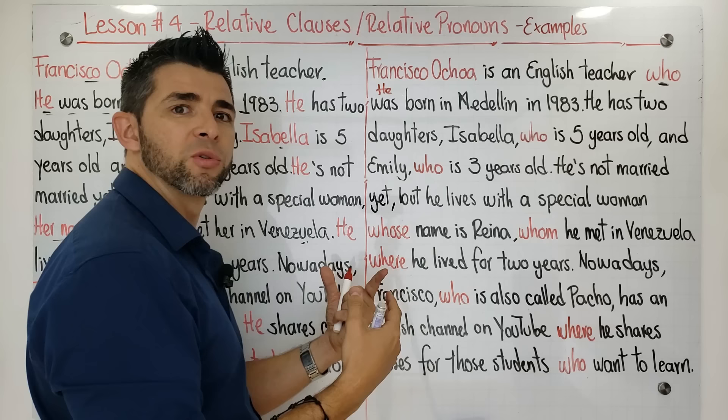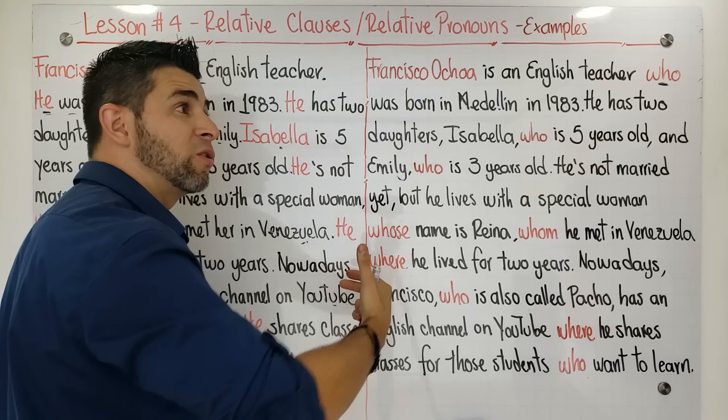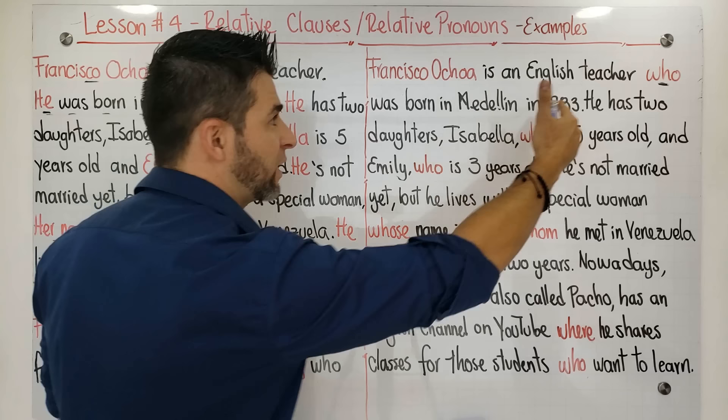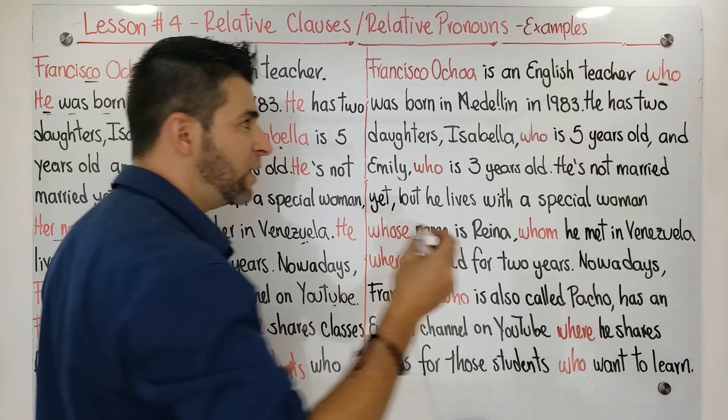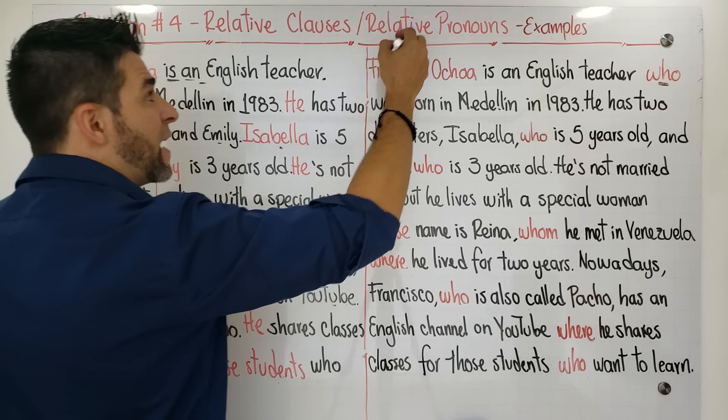This is a subject pronoun and this is a relative pronoun — it's very weird to have two pronouns together. For example, in Spanish: 'Francisco Ochoa es un profesor de inglés, quien él nació en Medellín en 1983' — that's strange. You don't need that subject pronoun. The correct form is: 'Francisco Ochoa es un profesor de inglés, quien nació en Medellín en 1983.'